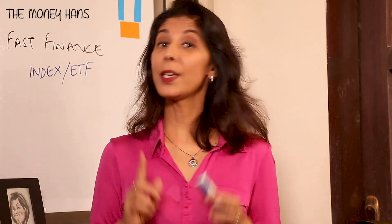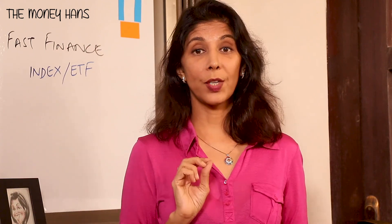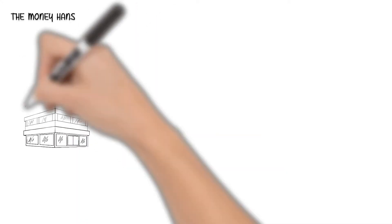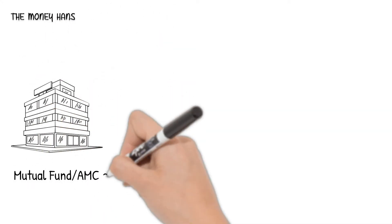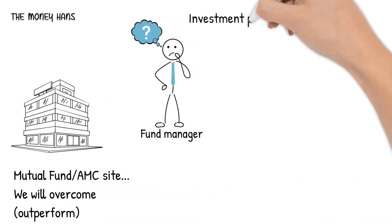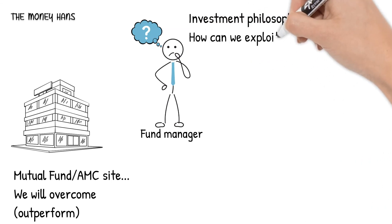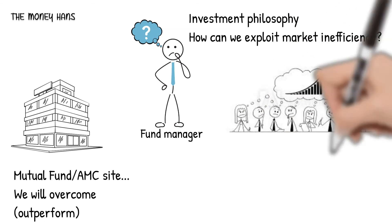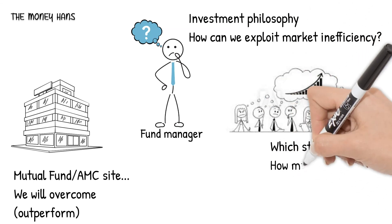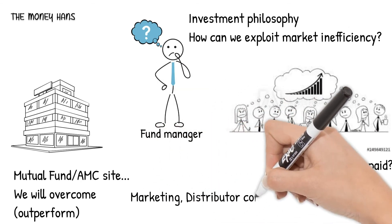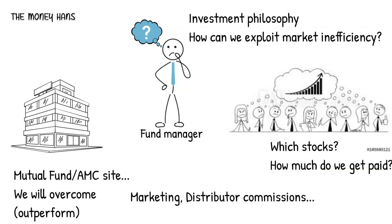You pool your money in a mutual fund which a fund manager manages. Most mutual funds you see advertised are active funds. The fund manager has to think hard to come up with an investment philosophy about which parts of the markets are inefficient, and then a style and process of how his team picks stocks to produce higher returns than the index. Of course, the team has to get paid, and marketing costs money too, along with a commission to the distributor for helping to select the fund.